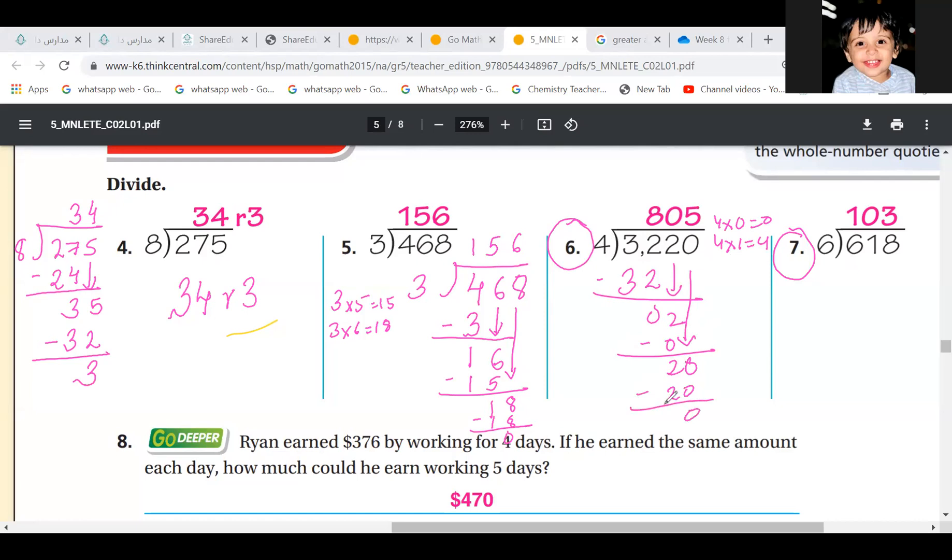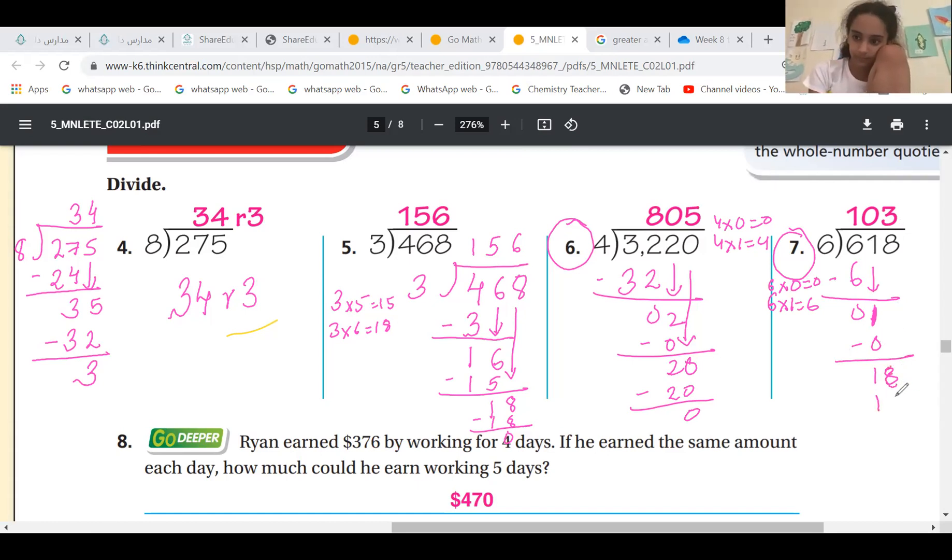Here, six times one is six. And then one comes down. One is less than six. You cannot choose six times one is six. You have to choose six times zero, zero. And then you have 18. So six times two is 12. There is something wrong. You have to choose 18. You have six times three, 18. And the remainder is zero. So that's why the answer is 103.